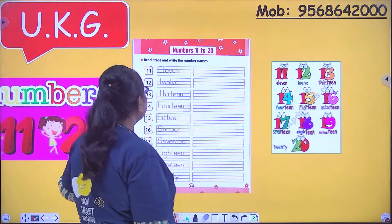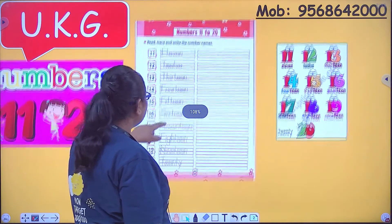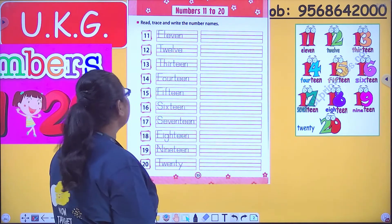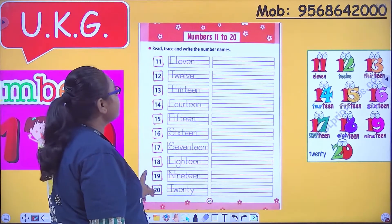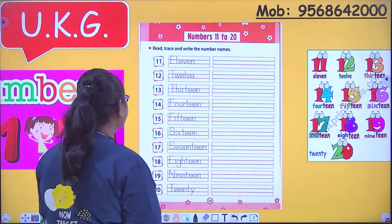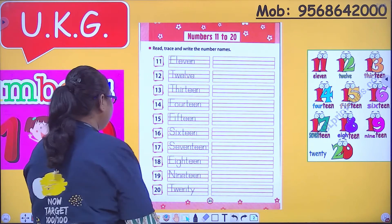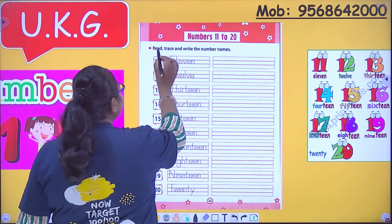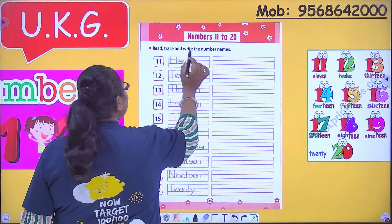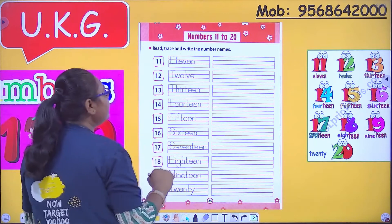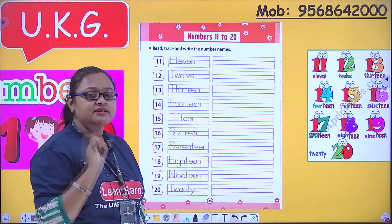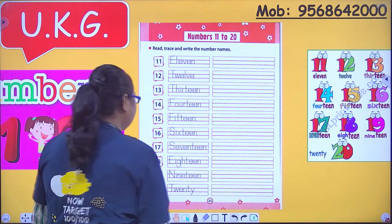Agar mam kabhi galti se galat bol de — 20. Now, what does the activity say? Open page number 25 and the heading says: Numbers 11 to 20. The activity says read, trace and write numbers and number names. Kya karna hai? Humein number names ki tracing karni hai — numbers ki nahi, number names ki tracing karni hai.